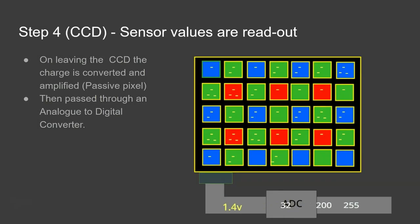Step four, the sensor values are read out and this is where CCDs and CMOS sensors vary. So first of all we'll have a look at a CCD sensor. So a charge coupled device, what it does is the charge that builds up inside of each pixel,